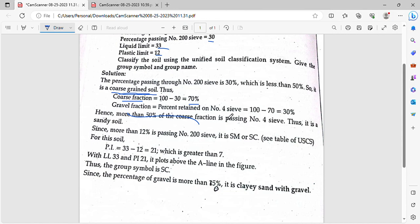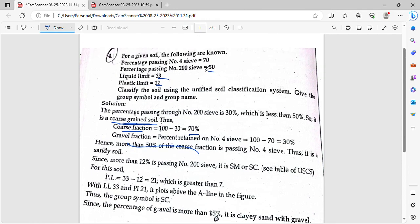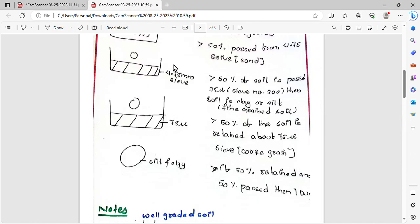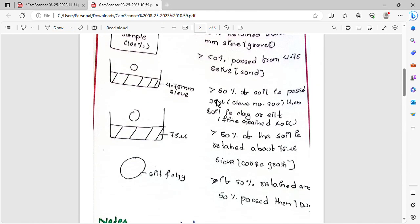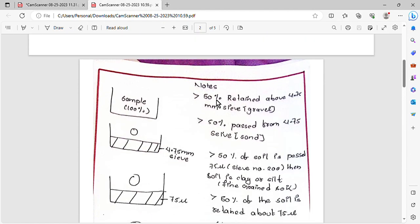Sieve number 4 means 70% passing. So 100 minus 70 is 30% retained. Sieve number 4 means 4.75 mm sieve. Now, 30% is retained.